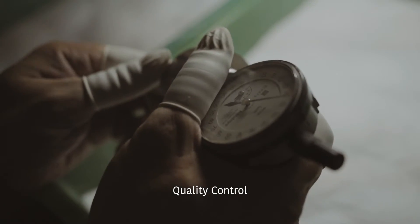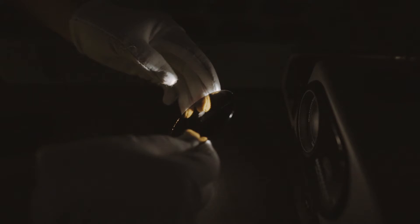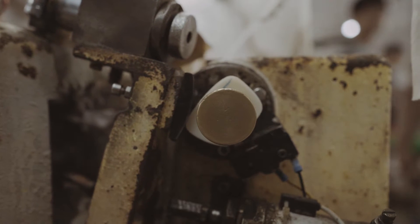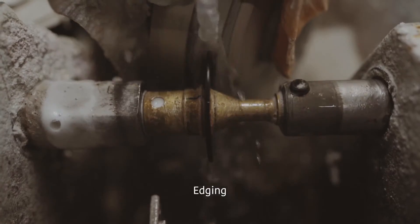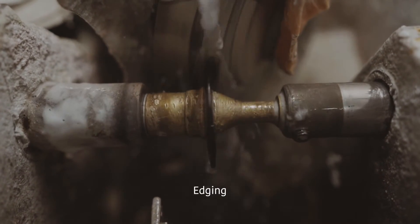Another round of hand checked quality control is then done to inspect each glass lens after the polarization process. When lenses are up to standard, edging shapes each of them so they fit into their intended frame design.